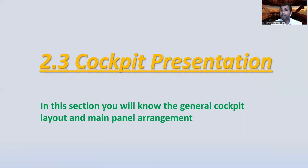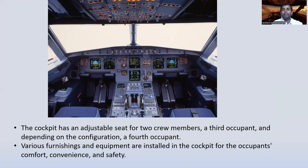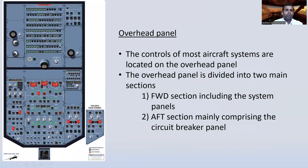Now let's go to section 2.3 — Cockpit Presentation. In this section you will know the general cockpit layout and main panel arrangement. Here is the A320 cockpit. The cockpit has adjustable seats for two crew members, and depending on configuration, a third and fourth occupant seat may also be present.